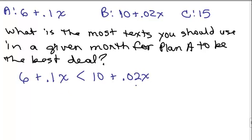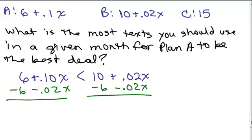Now, if you want, you could change everything to cents instead of dollars when you're figuring this part out. I'm going to leave it with the decimals for now. I want to get my variables on one side, so I'll subtract 0.02x from both sides, and then I'm also going to subtract 6 from both sides. When you're adding or subtracting, it doesn't change the inequality, so this gives me 0.08x is less than 4.